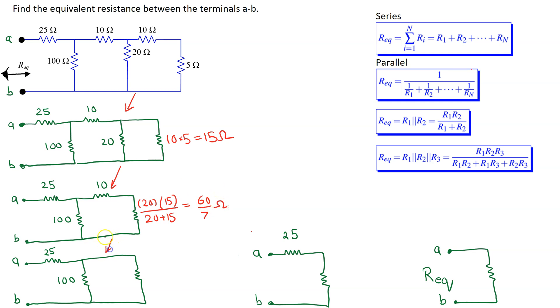Next we can see that the 10 ohm resistor is in series with this equivalent resistance. So the equivalent resistance now becomes 10 plus 60 over 7, which equals 130 over 7 ohms, and the circuit now reduces to this configuration.